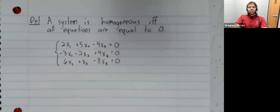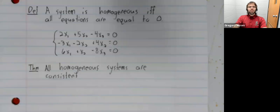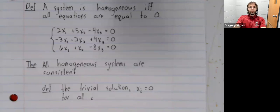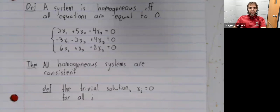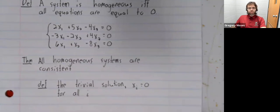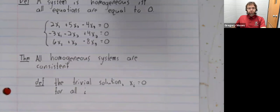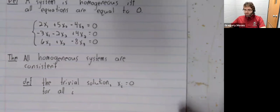Now, homogeneous systems have a special property, and that's that they're always consistent. A homogeneous system always has at least one solution. In particular, every homogeneous system has the trivial solution, where everything is zero.